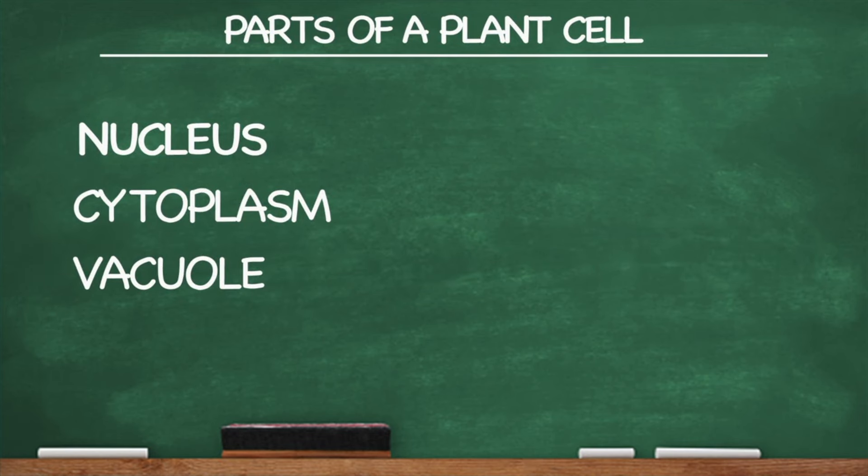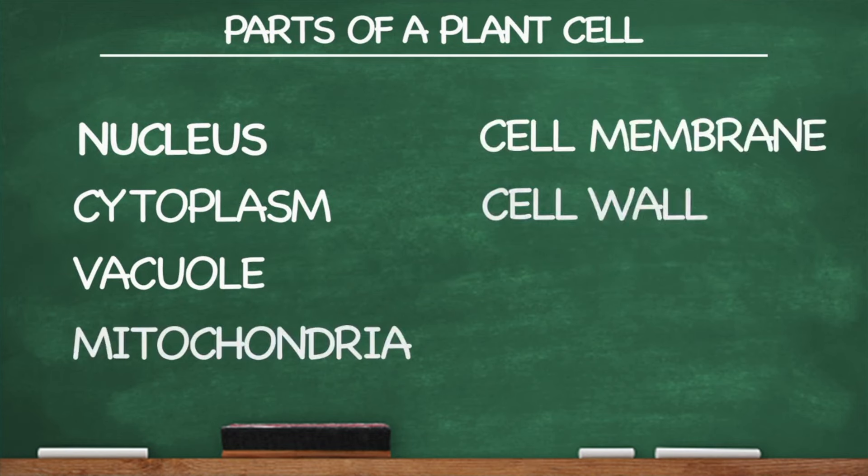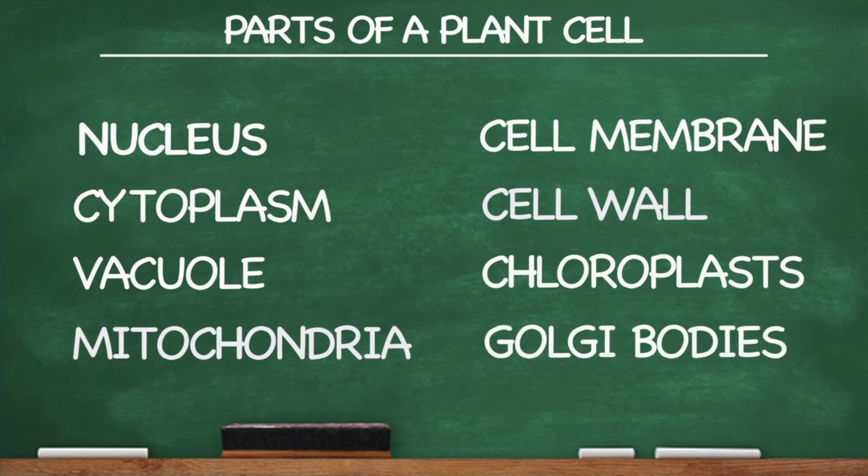Nucleus, cytoplasm, vacuole, mitochondria, cell membrane, cell wall, chloroplasts, golgi bodies. These are the parts of a plant cell.